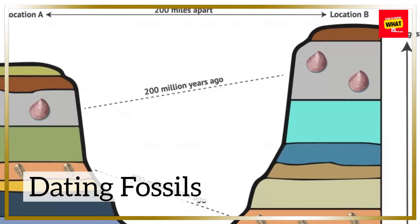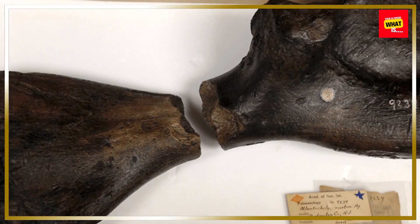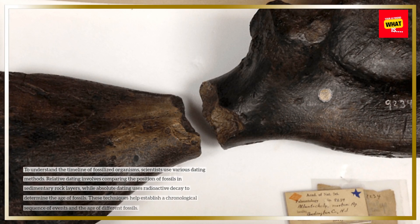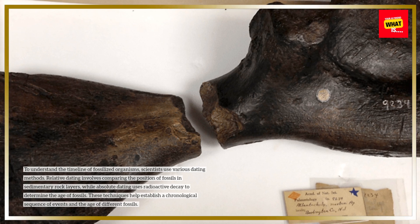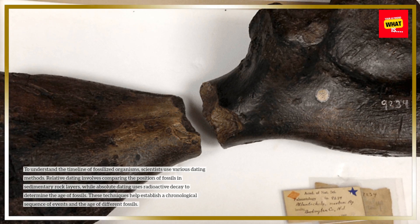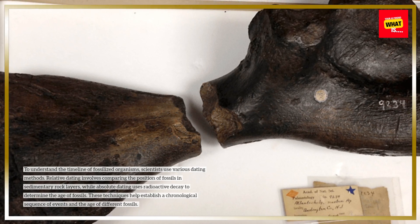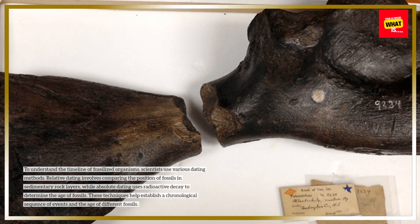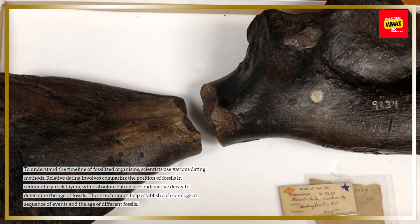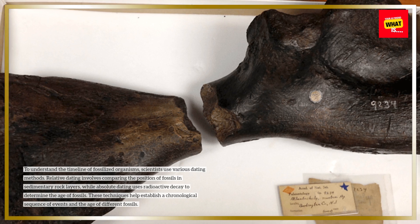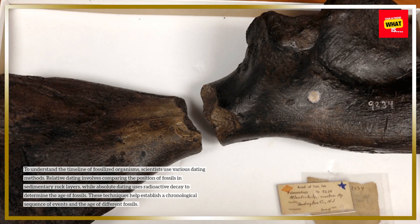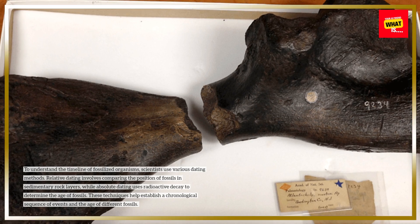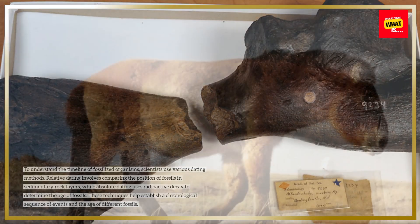Dating Fossils. To understand the timeline of fossilized organisms, scientists use various dating methods. Relative dating involves comparing the position of fossils in sedimentary rock layers, while absolute dating uses radioactive decay to determine the age of fossils. These techniques help establish a chronological sequence of events and the age of different fossils.